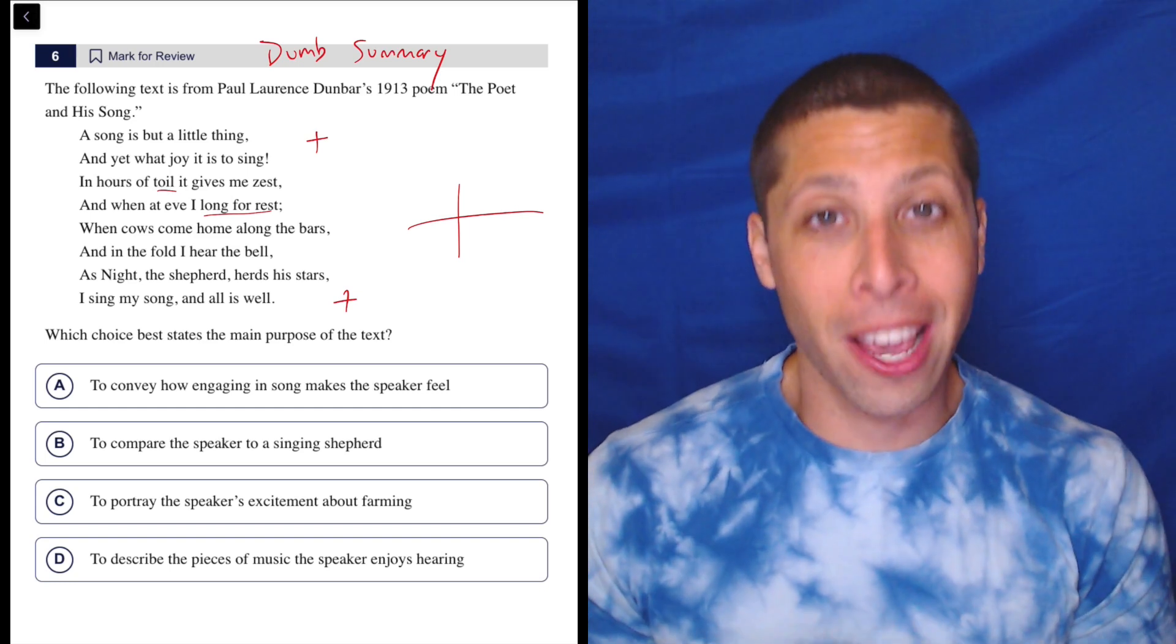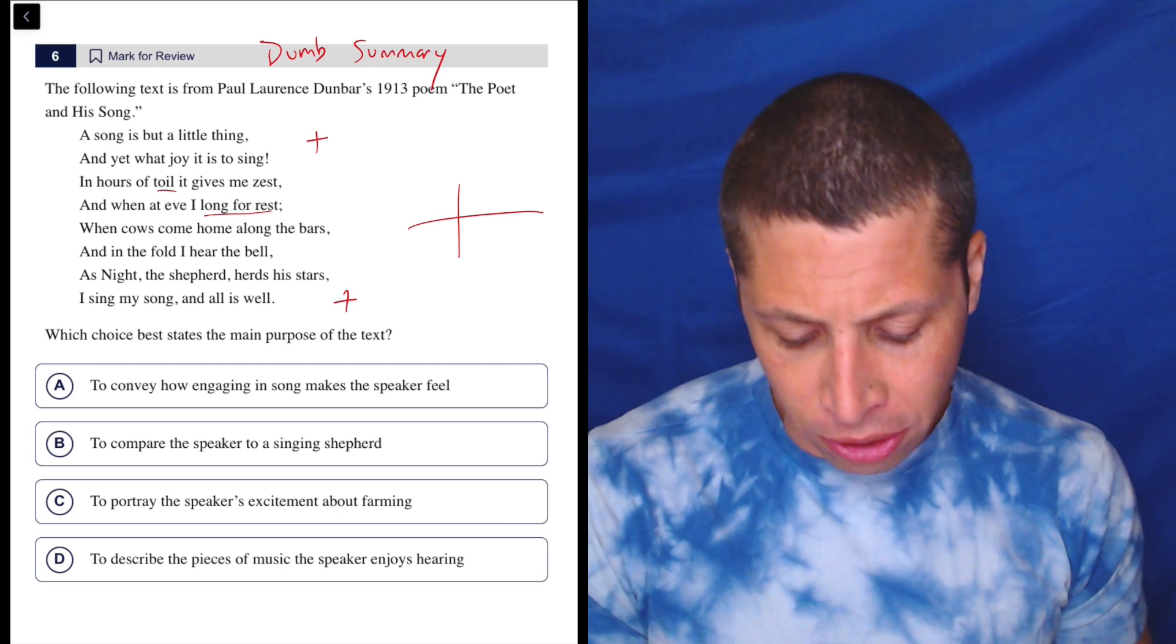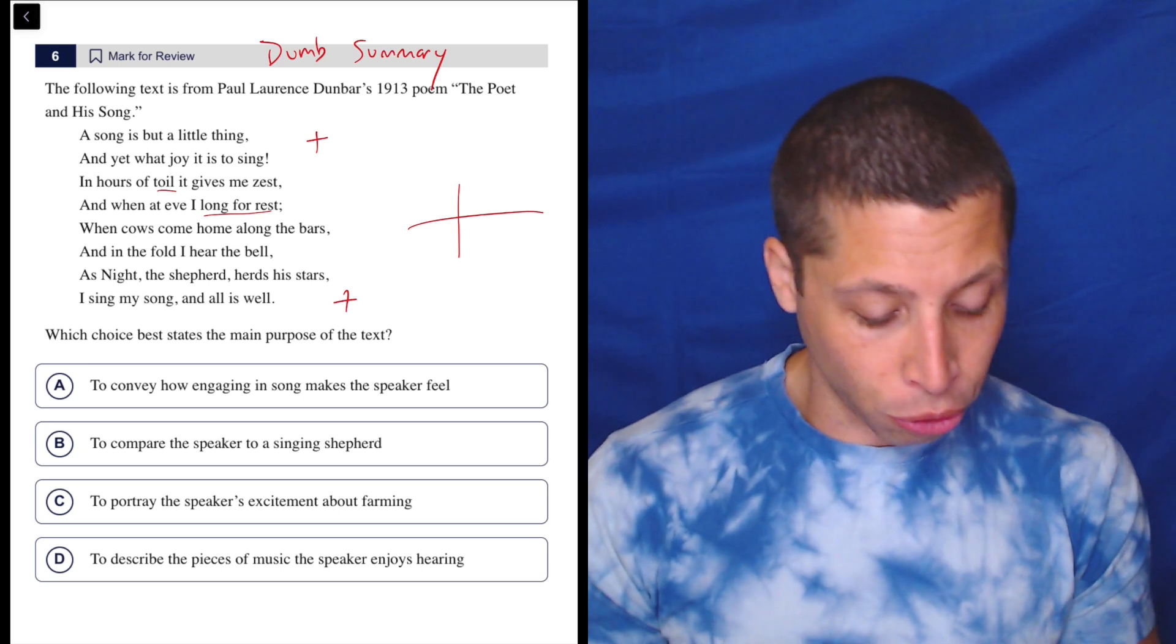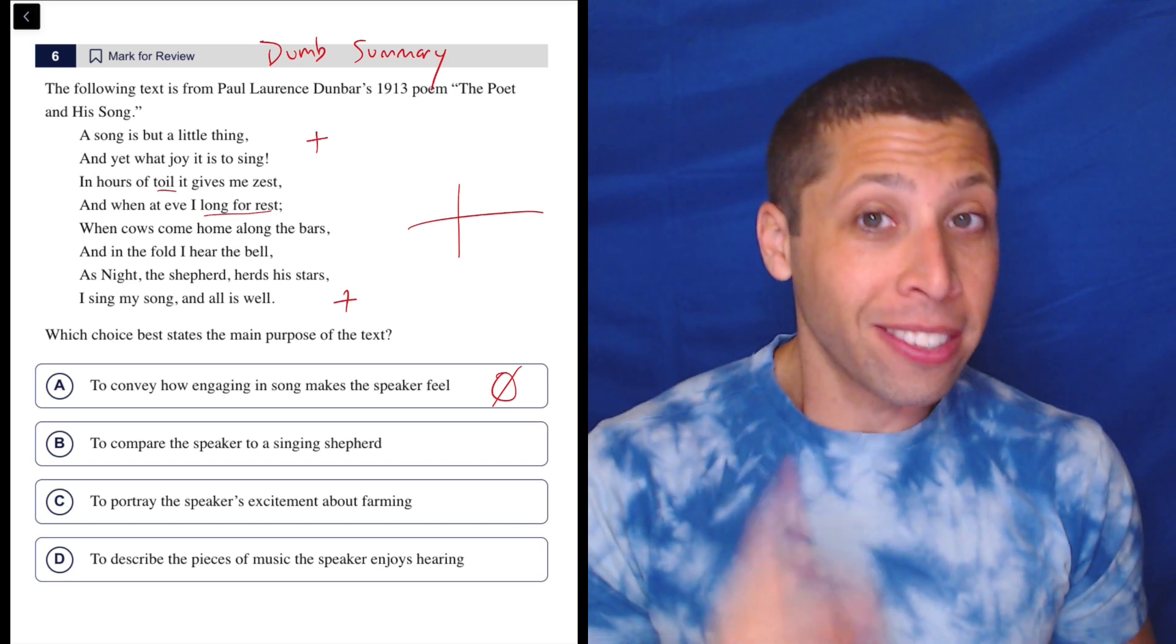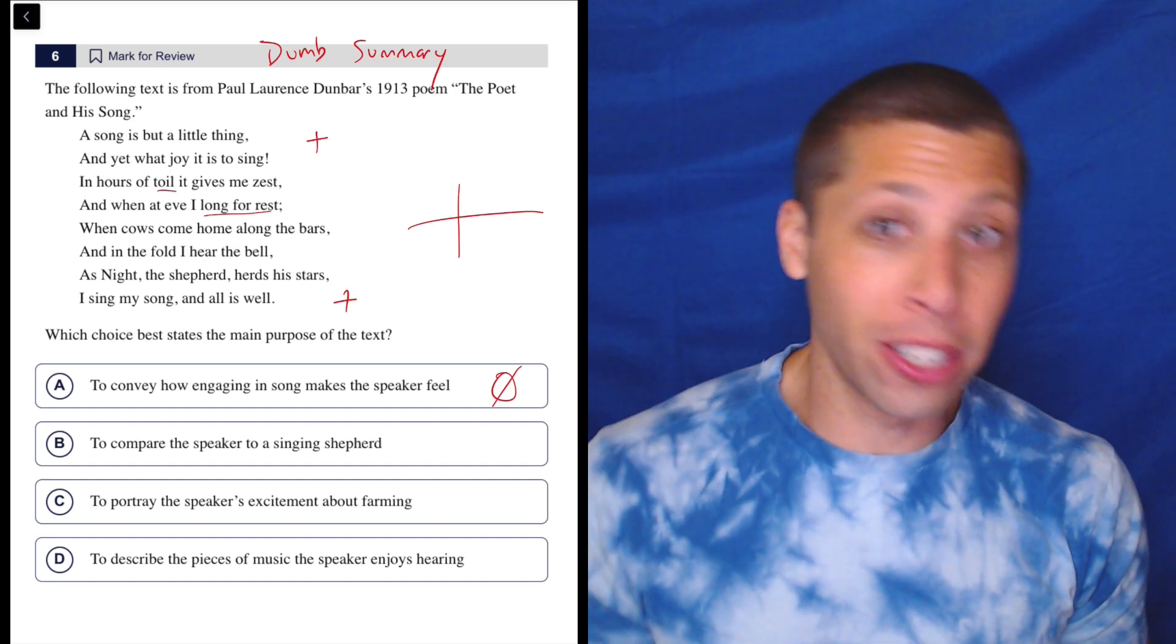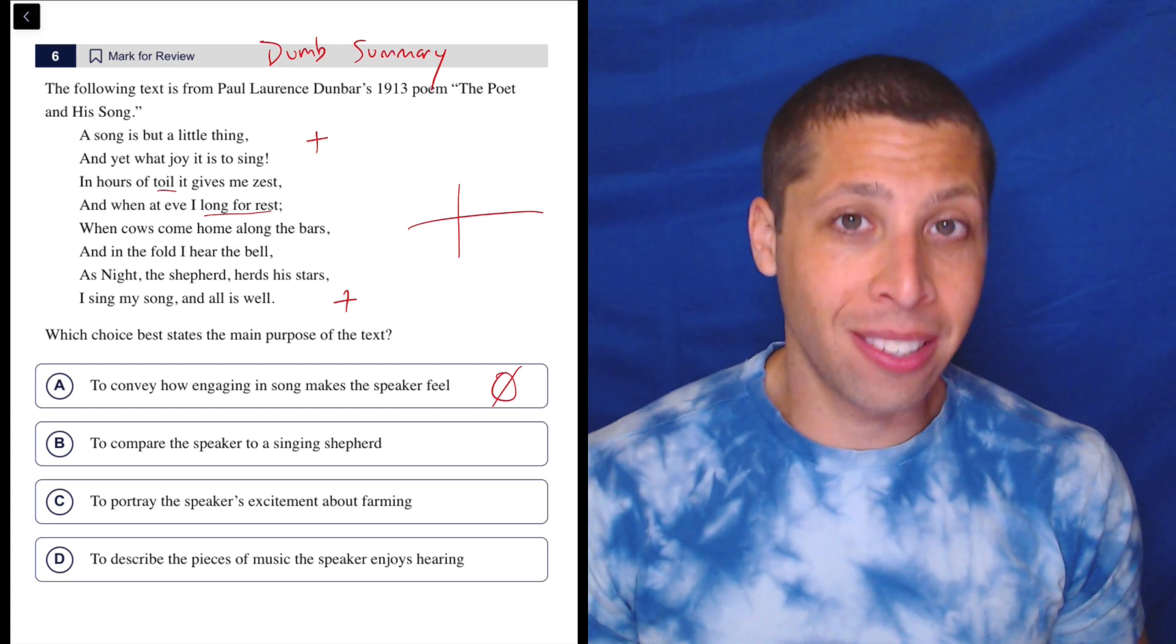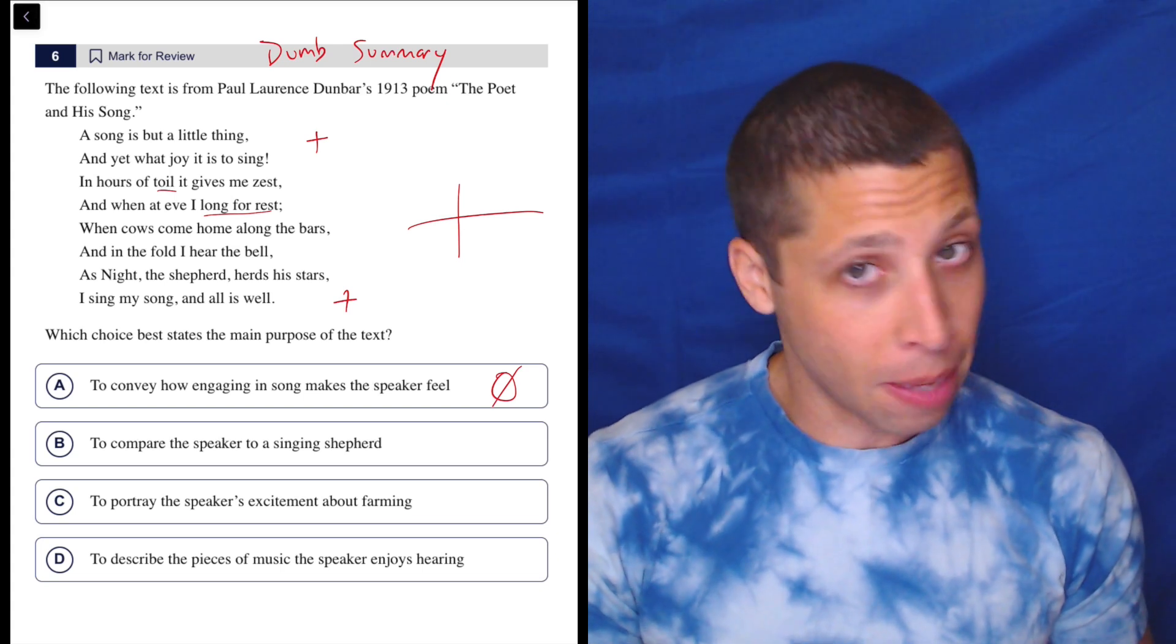In this case, they're trying to say that those negatives are kind of erased by the positive of the song. So from there, let's just go to the choices. So A, to convey how engaging in song makes the speaker feel. Well, notice that is a neutral choice, right? It doesn't say whether it makes him feel good or bad. The poem says it makes him feel good, but the choice doesn't get that far. Is that good? Is that bad? But it's not wrong, right? It doesn't say that it makes him feel bad. It doesn't have a negative connotation. So we can't eliminate this choice, even though it doesn't quite rise to the level of our dumb summary and our connotation. But let's keep going.